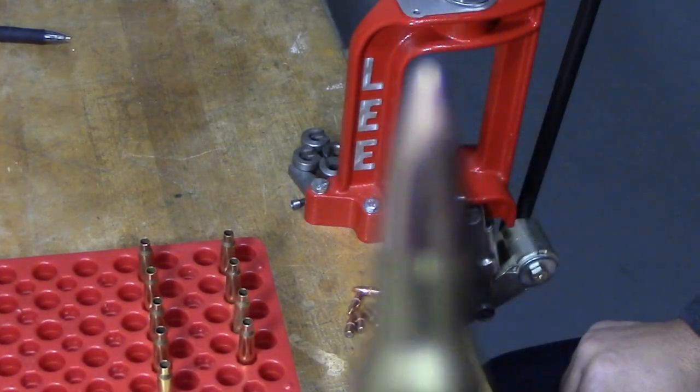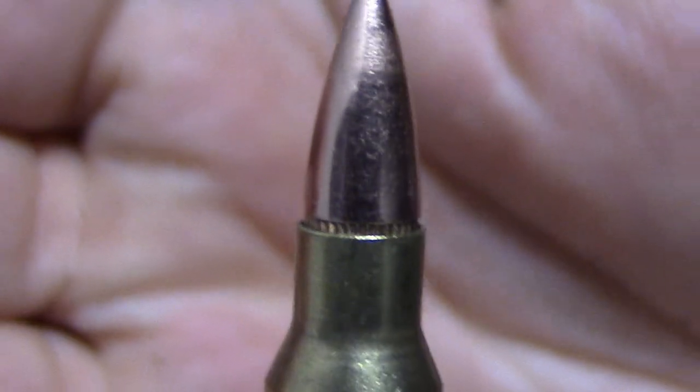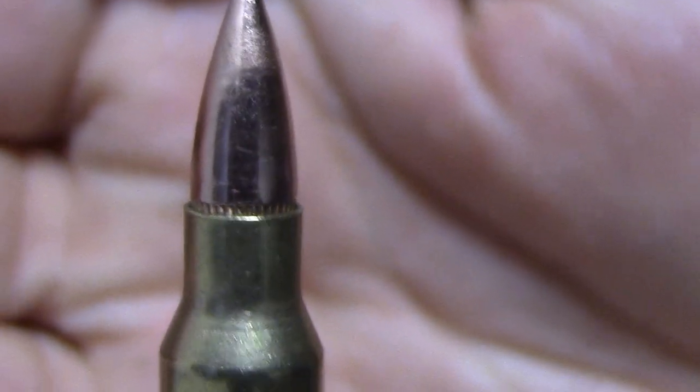So here it is at the correct overall length. You can see the case mouth is right in the middle of the cannelure. So I'm going to repeat this for the rest of these, and the next video we will move on to crimping.